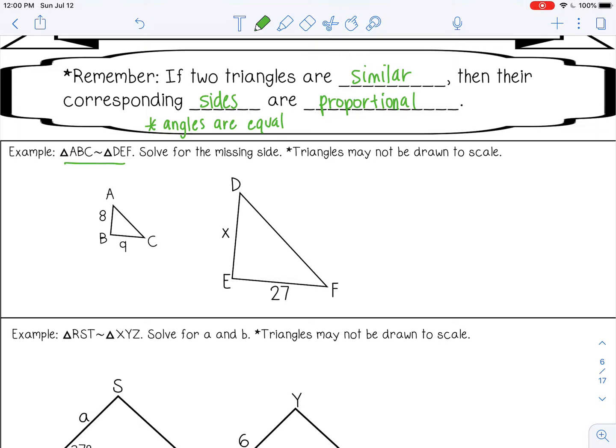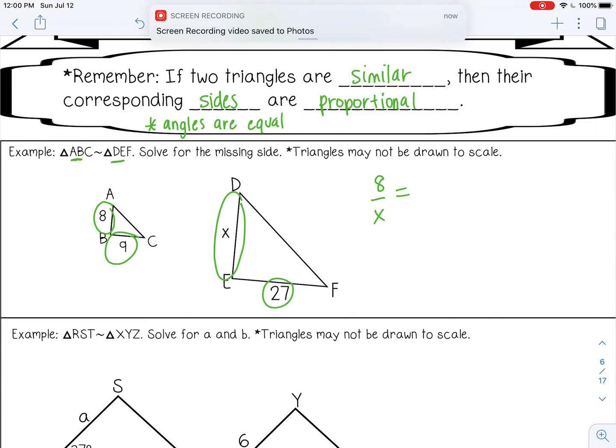We want to set up a proportion because the sides are proportional, and that will help us solve for the missing side. I'm going to match 8 with X, because if I look at my similarity statement, AB and DE are corresponding. So 8 over X, and I'm making a proportion, which is just a ratio equal to a ratio.